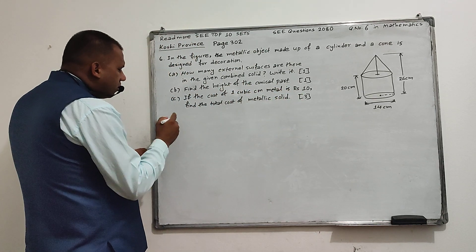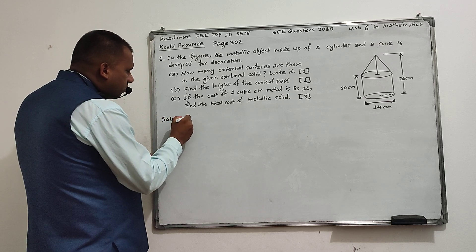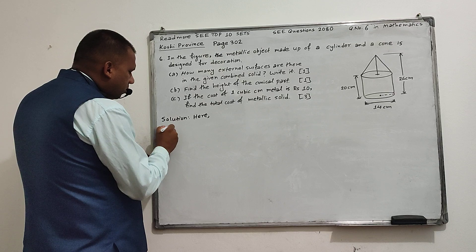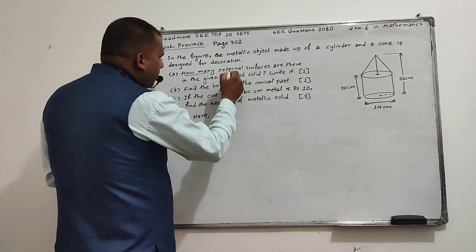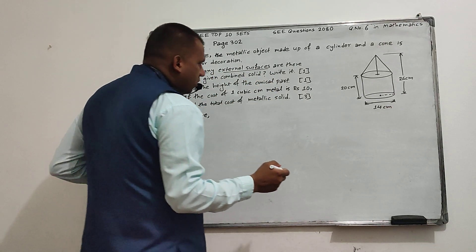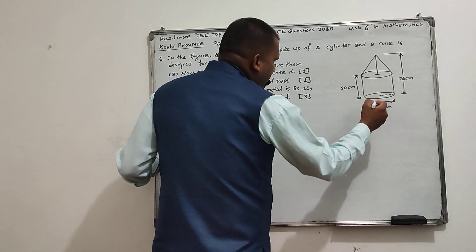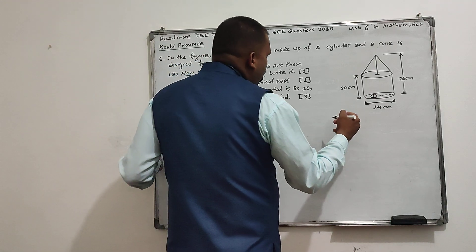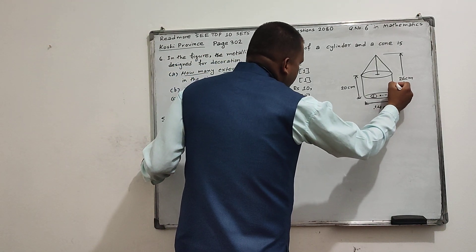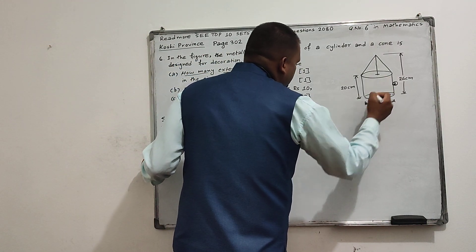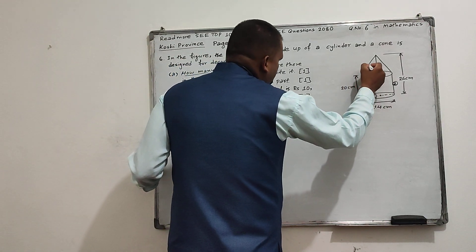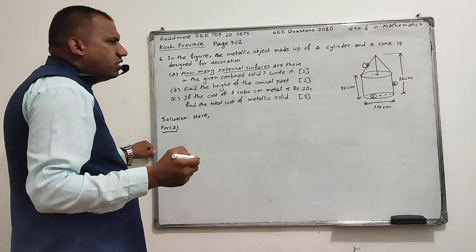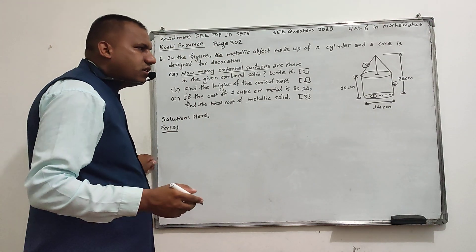Now its solution. For part A, how many external surfaces? On this combined solid: the base is number 1, one surface; the curved surface area of the cylindrical part is number 2; and the curved surface area of the conical part is number 3. So there are 3 external surfaces.